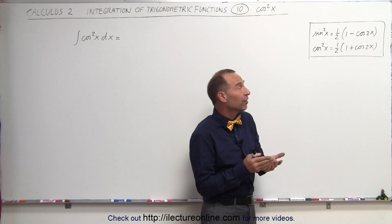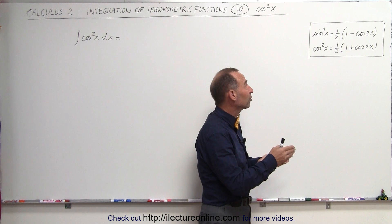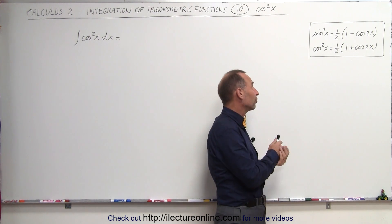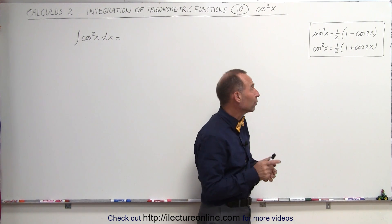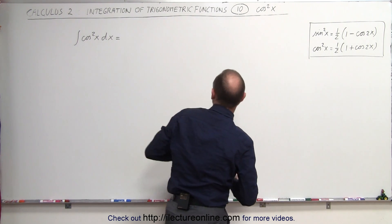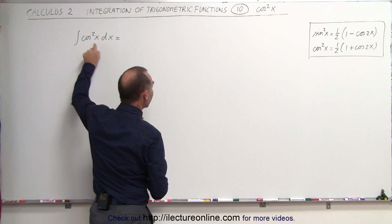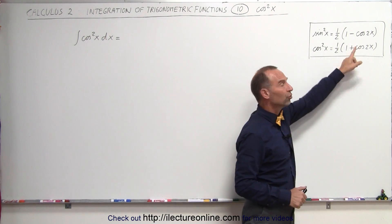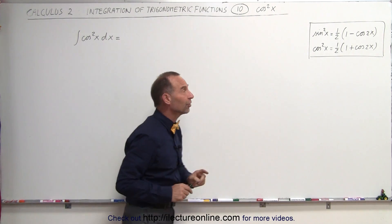Notice the sine square of x can be written as 1/2 times 1 minus the cosine of 2x, and the cosine square of x can be written as 1/2 times 1 plus the cosine of 2x. What that does is it allows you to take a function which is squared and replace it by a function which is to the first power, which is a lot easier to integrate.